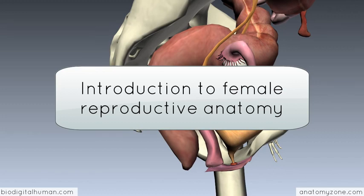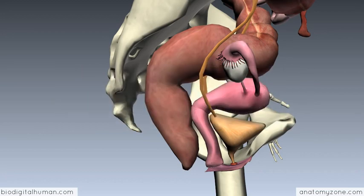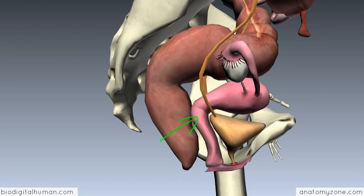This is an introduction to female reproductive anatomy. The idea of this tutorial is not to go into huge amounts of detail, but to introduce some of the basic elements of the female reproductive tract. What we're looking at here is a lateral view of the pelvic viscera. Anteriorly we've got the bladder, behind that the female reproductive system, and then behind that the rectum and the anal canal.